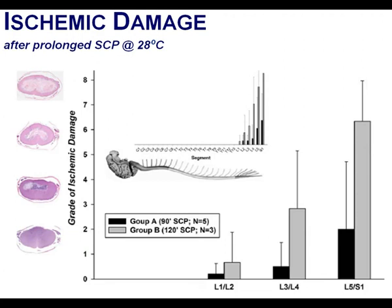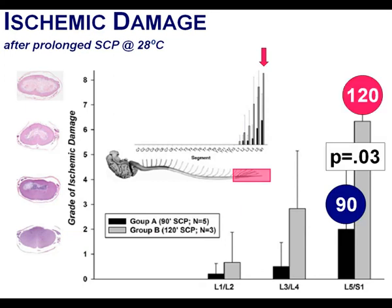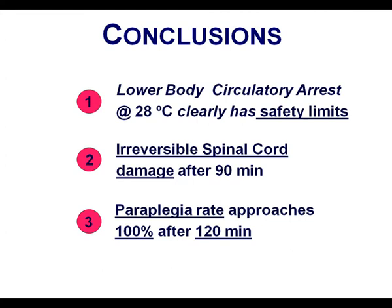Regional ischemic damage after lower-body circulatory arrest and SACP for 90 and 120 minutes at 28 Celsius showed cord segments from C1 down to T12/T13 were not affected, but dramatic ischemic damage was seen at the lower portion of the spinal cord, significantly worse in the 120-minute group. These findings emphasize that duration of upper-body perfusion at moderate hypothermia has clear safety limits: after 90 minutes at 28 Celsius, irreversible spinal cord damage may occur; after 120 minutes, the rate of paraplegia may approach 100%.